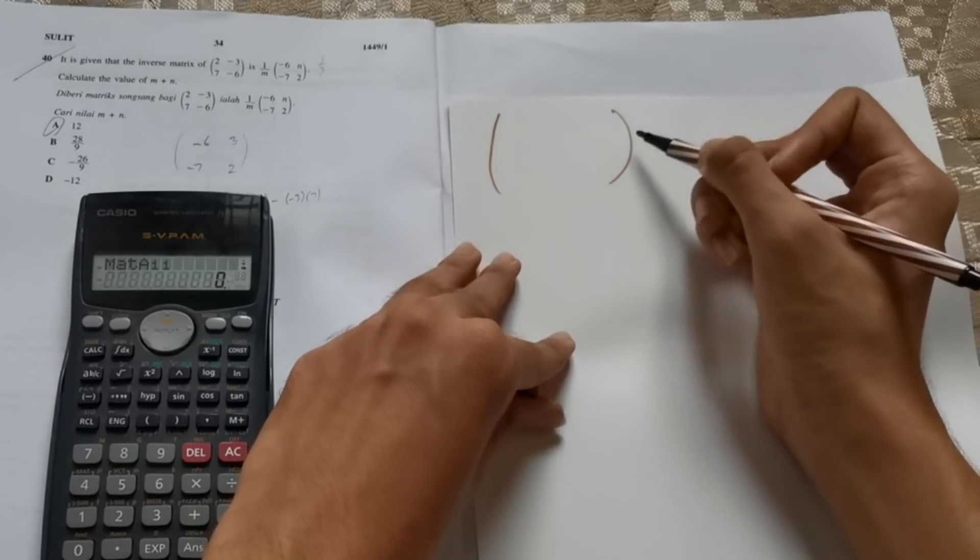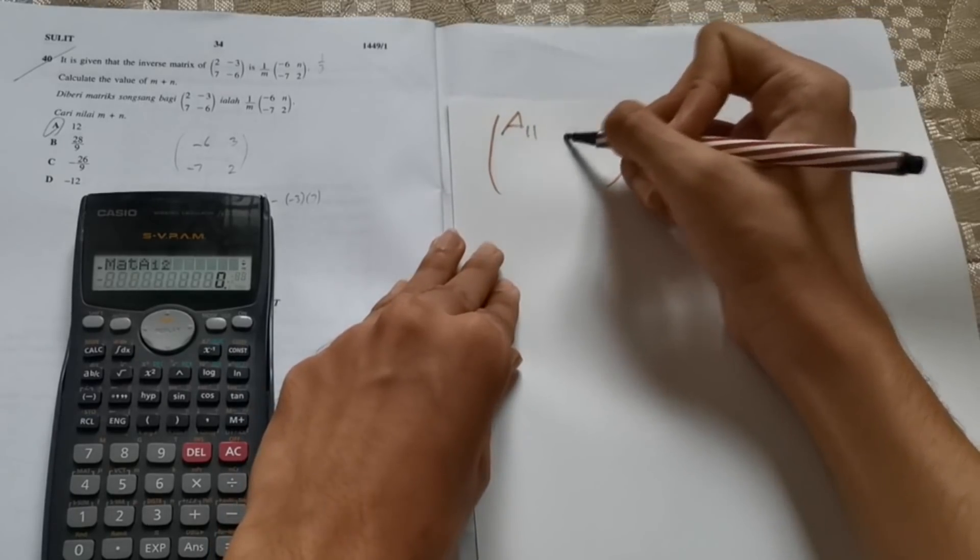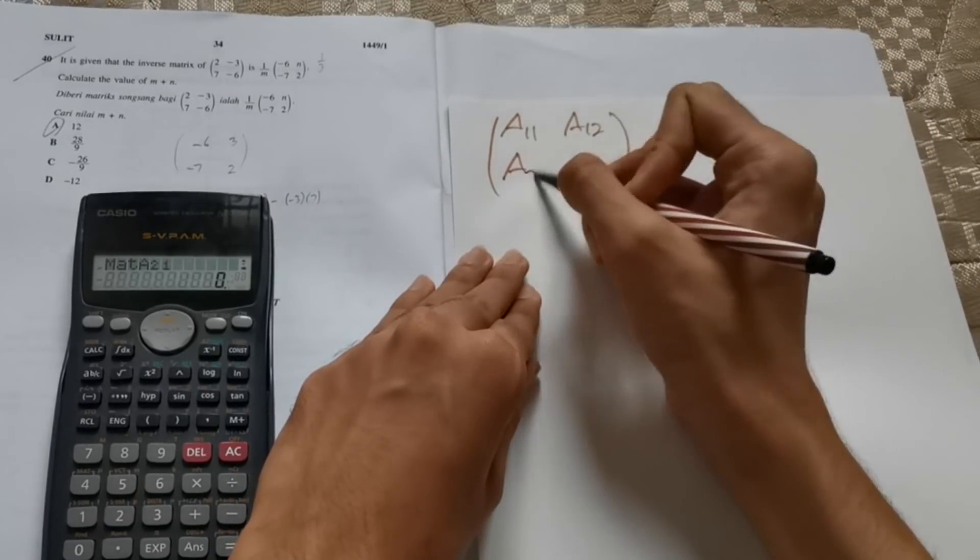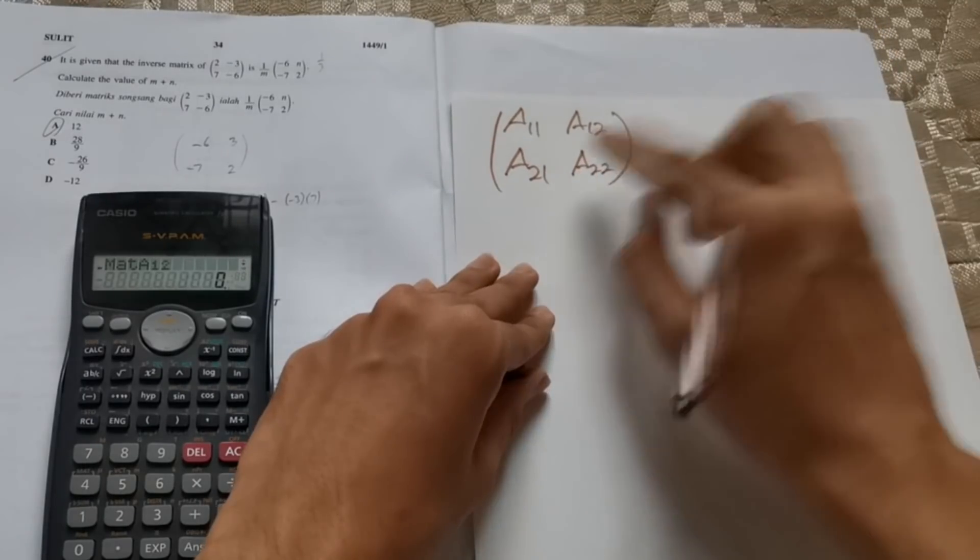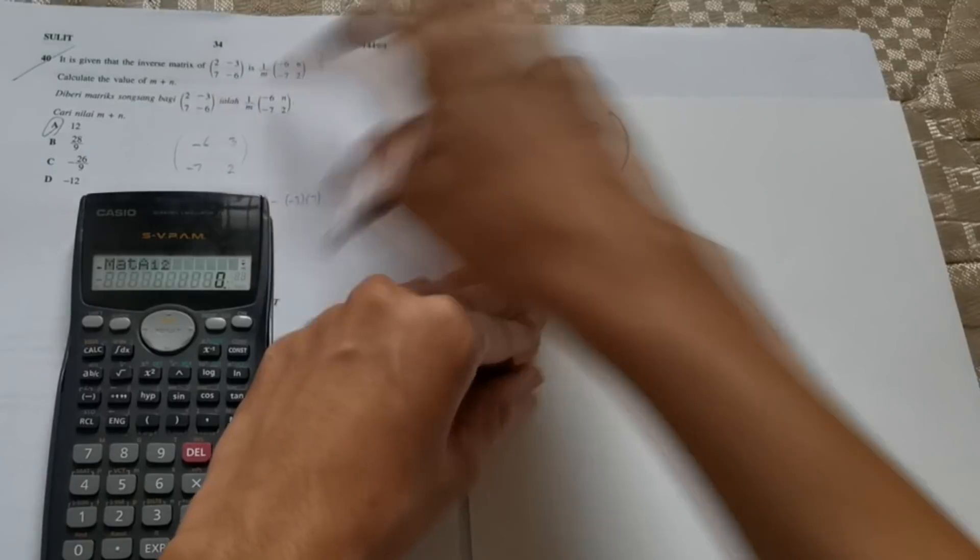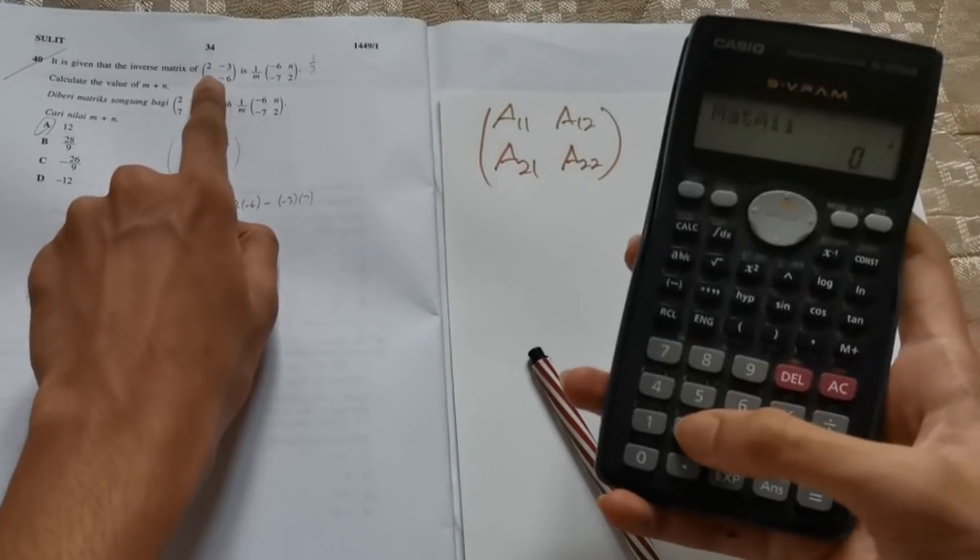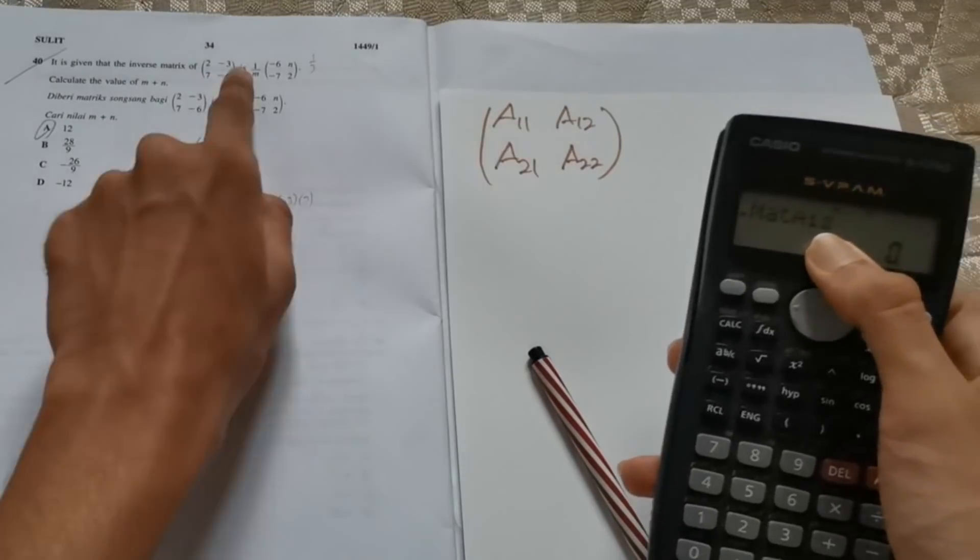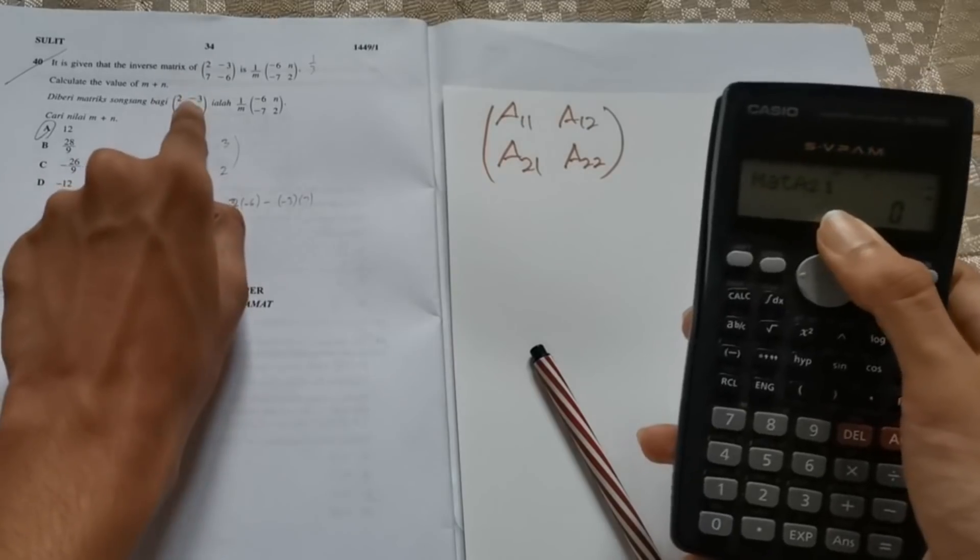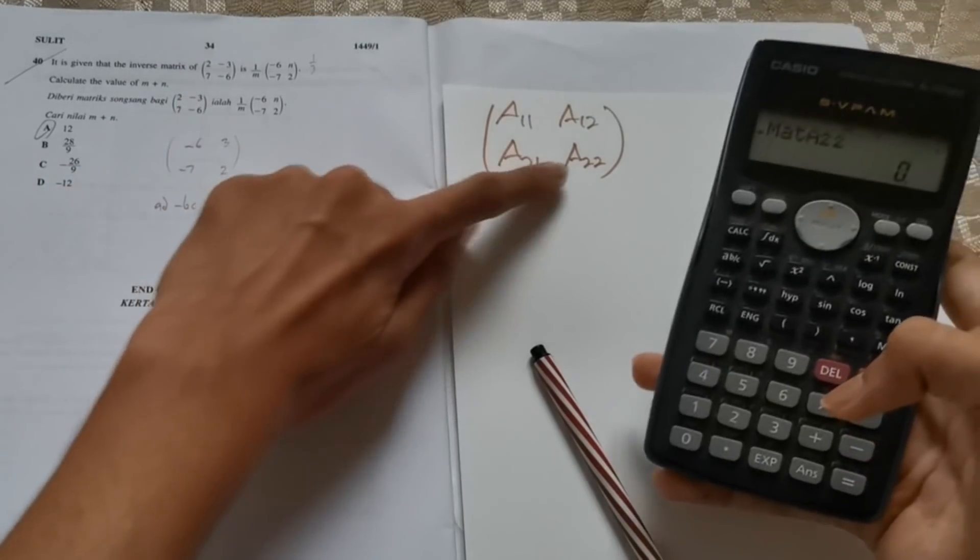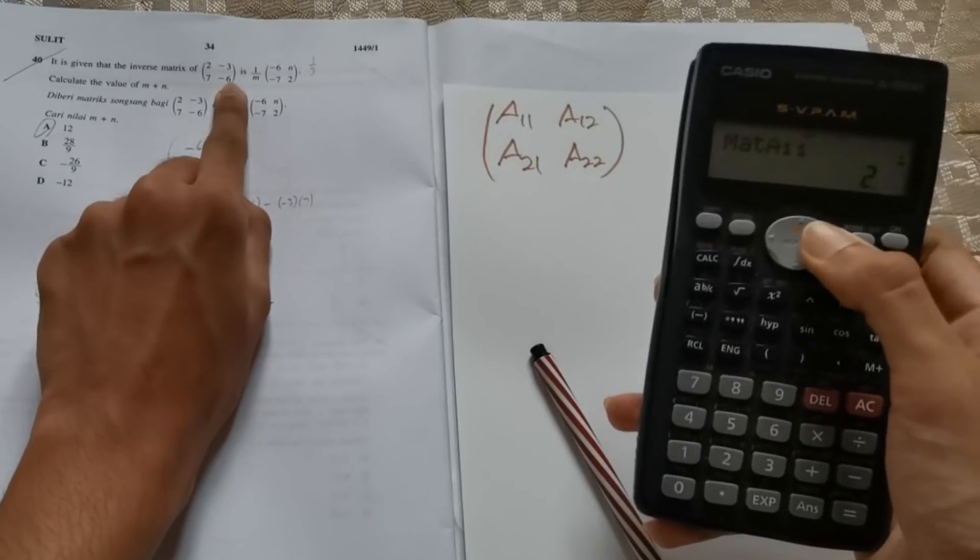So this is how your calculator determines the position of the value in the matrix. Since the question is 2 by 2, the top left is called A11, the top right is called A12, the bottom left is called A21, and the bottom right is called A22. So you need to compare this form to the question. When it asks for A11, you need to press 2 and then equal.